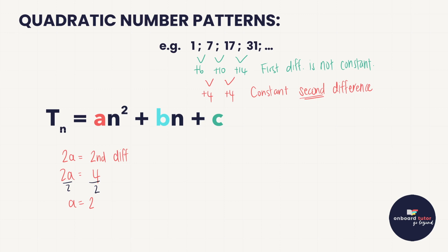Next, we need to know that 3a + b equals the first first difference — that is, term 2 minus term 1. In our pattern, that's 7 minus 1 = 6. Substituting a = 2: 3 times 2 plus b = 6, so 6 + b = 6, which gives b = 0.